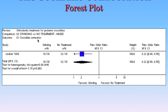The outcome here is whether the crossbite was still present in the permanent dentition. Looking at the results, we have one study — Linda, 1989. There were two groups: one group was randomly allocated to receive grinding of the primary canine in the mixed dentition. There was a total number of 38 in this group, and this figure here tells you that 19 individuals in this group still had a unilateral posterior crossbite in the permanent dentition following grinding of the primary canine.